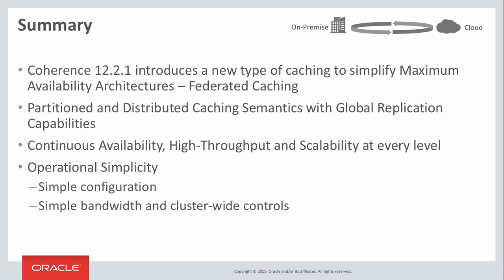In this session we looked at the new federated caching feature introduced in Coherence 12.2.1. We demonstrated how federated caches are just like regular partitioned distributed caches but with multi-site replication capabilities. We introduced new terminology including the concept of topologies and how to configure each of these new caches in existing applications. Finally, we introduced some of the new management and monitoring concepts, hopefully highlighting the simplicity of design and its operation. We hope you found this session useful. Thank you for your time, and we look forward to your feedback using federated caching.